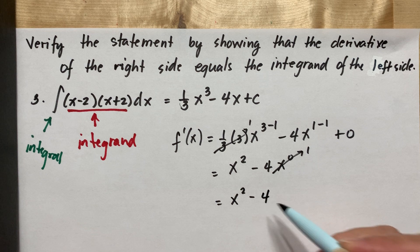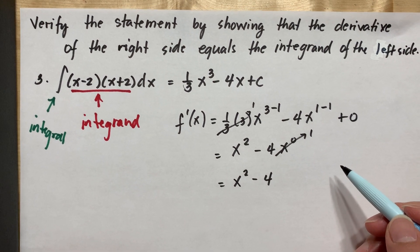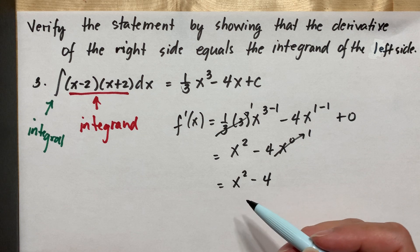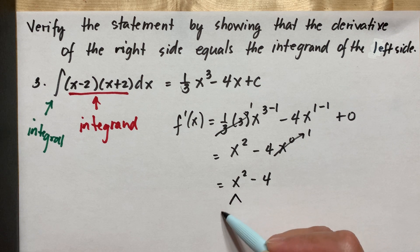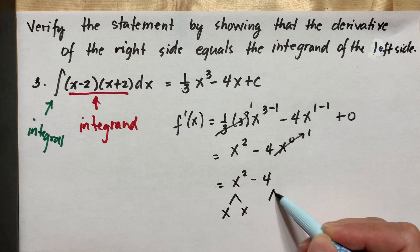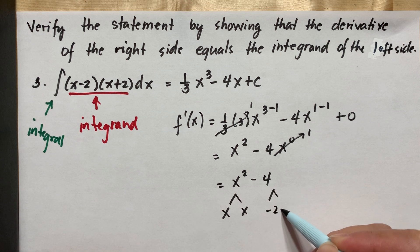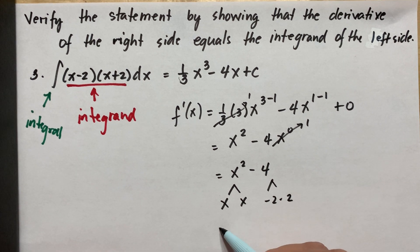Then if you apply your algebra, this is difference of two squares. So this will be x and x, and the factors of negative four are negative two and positive two.